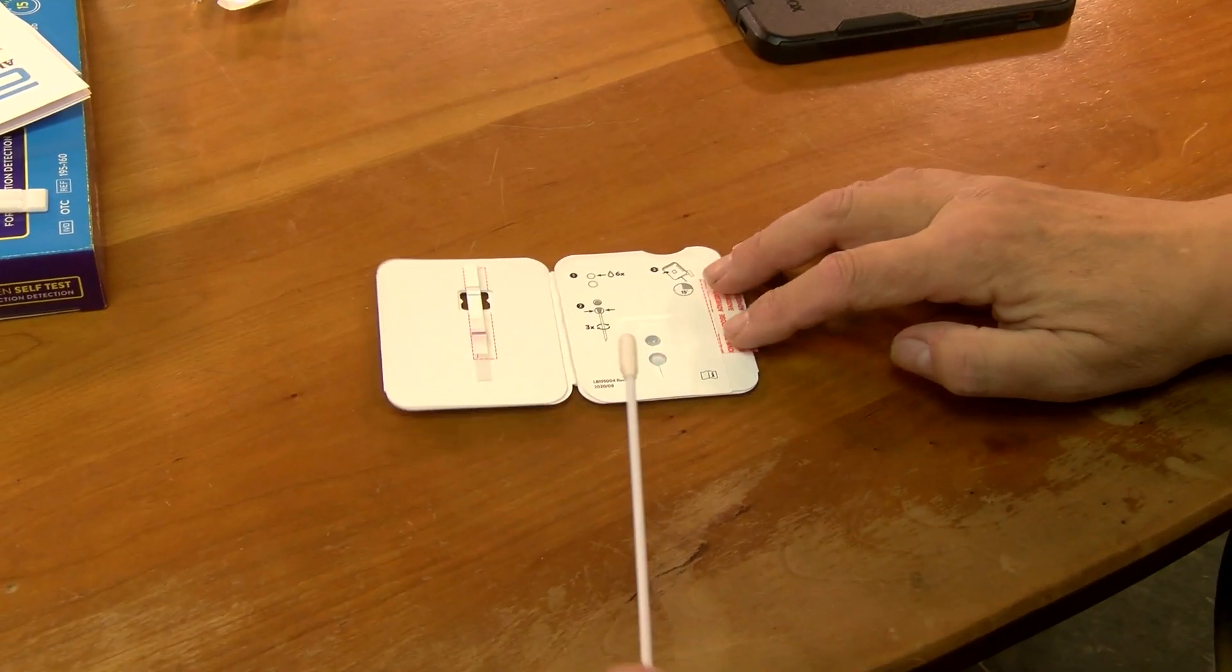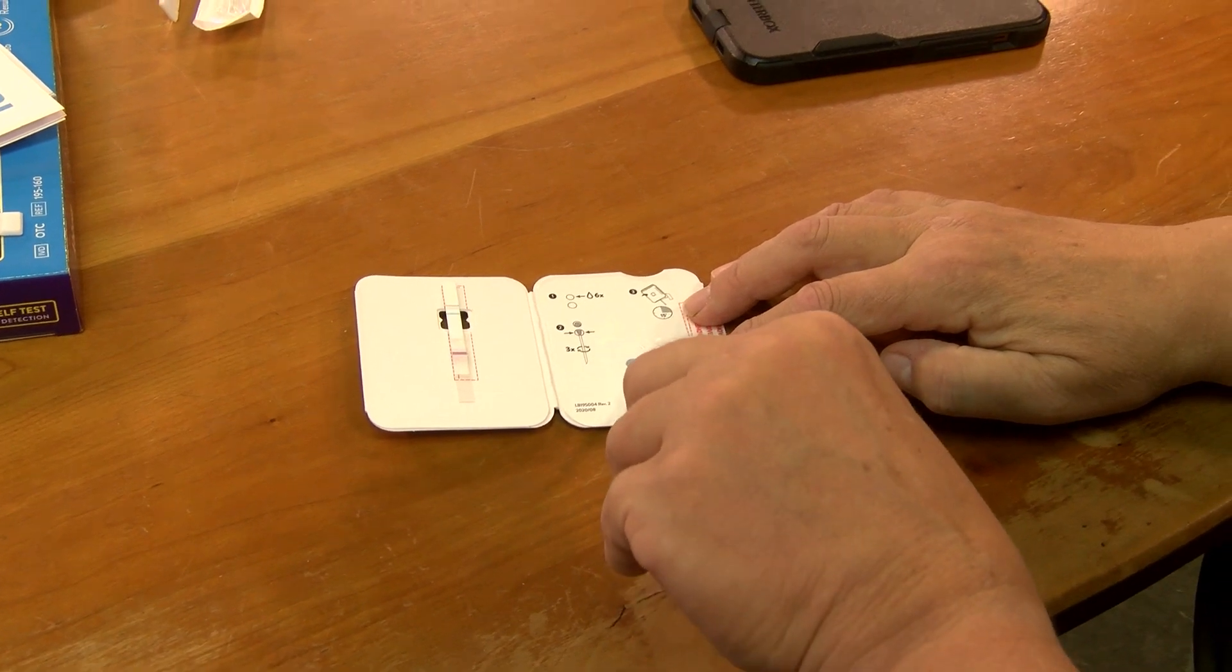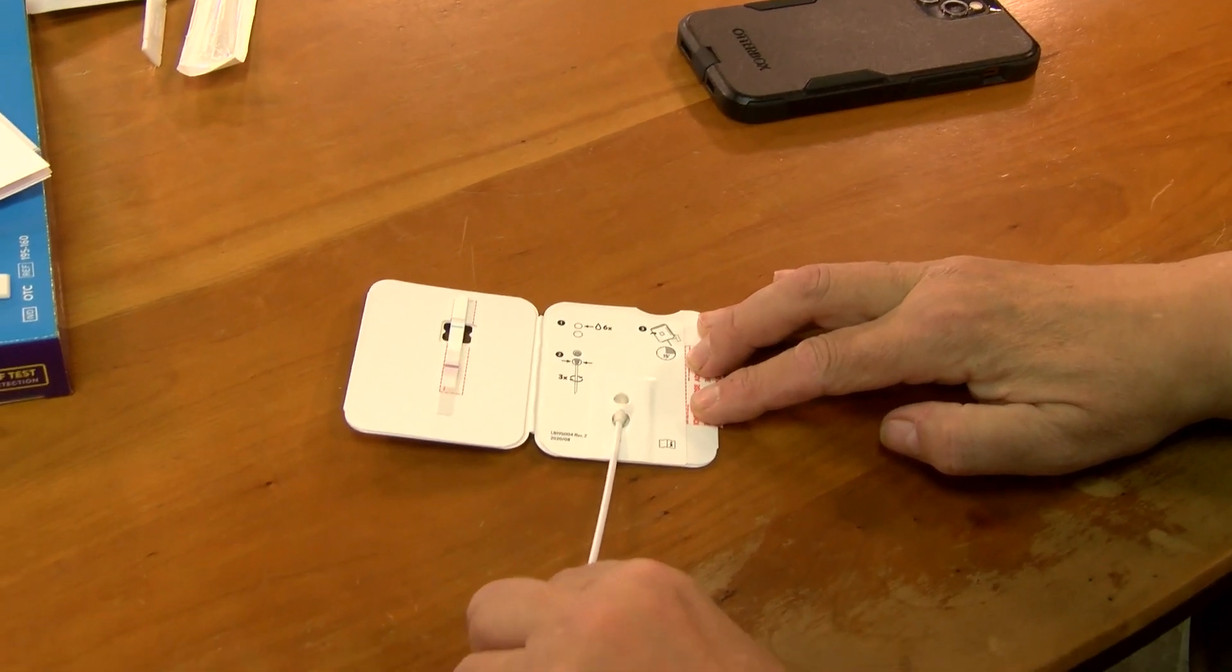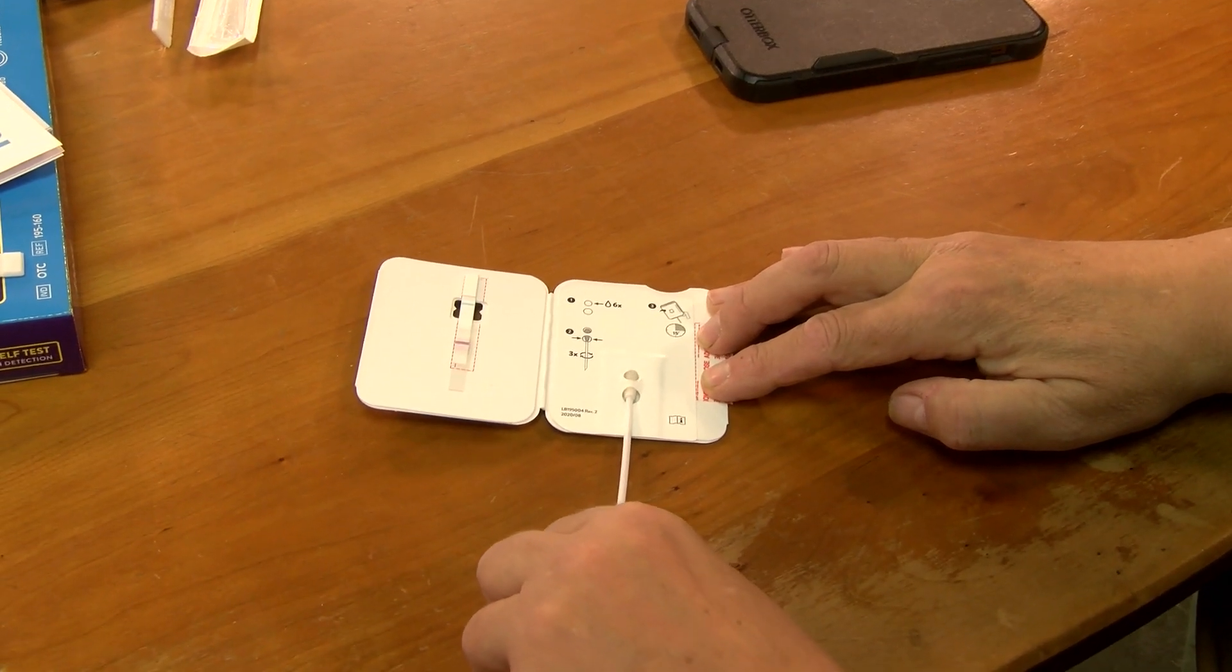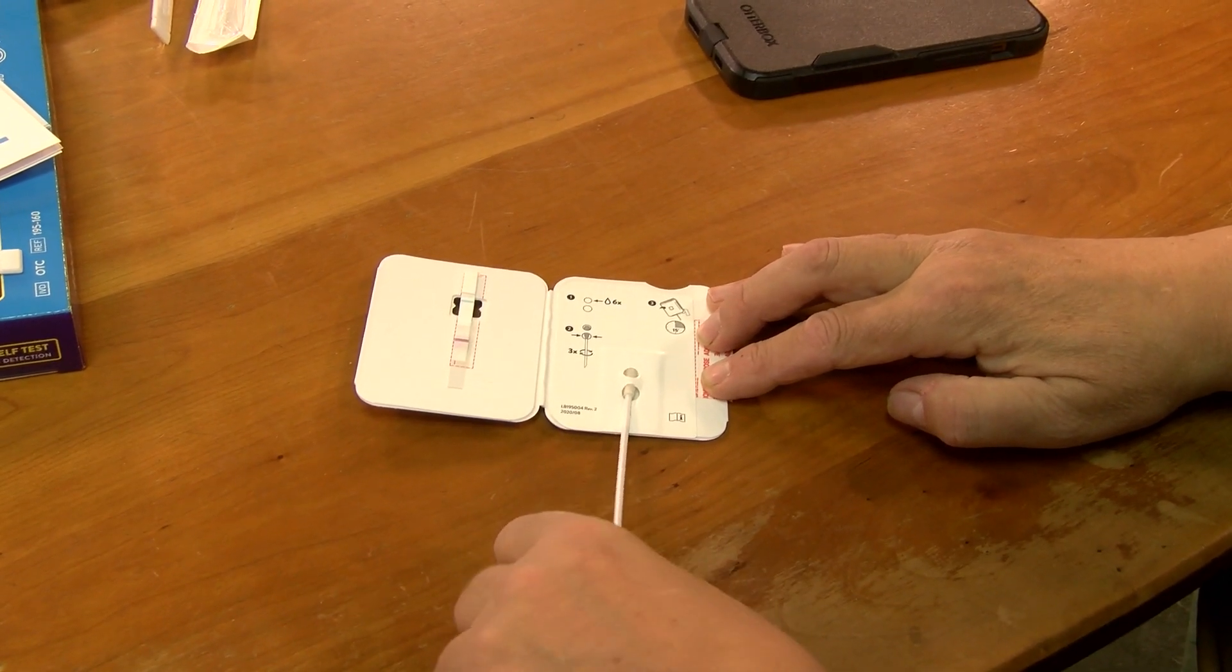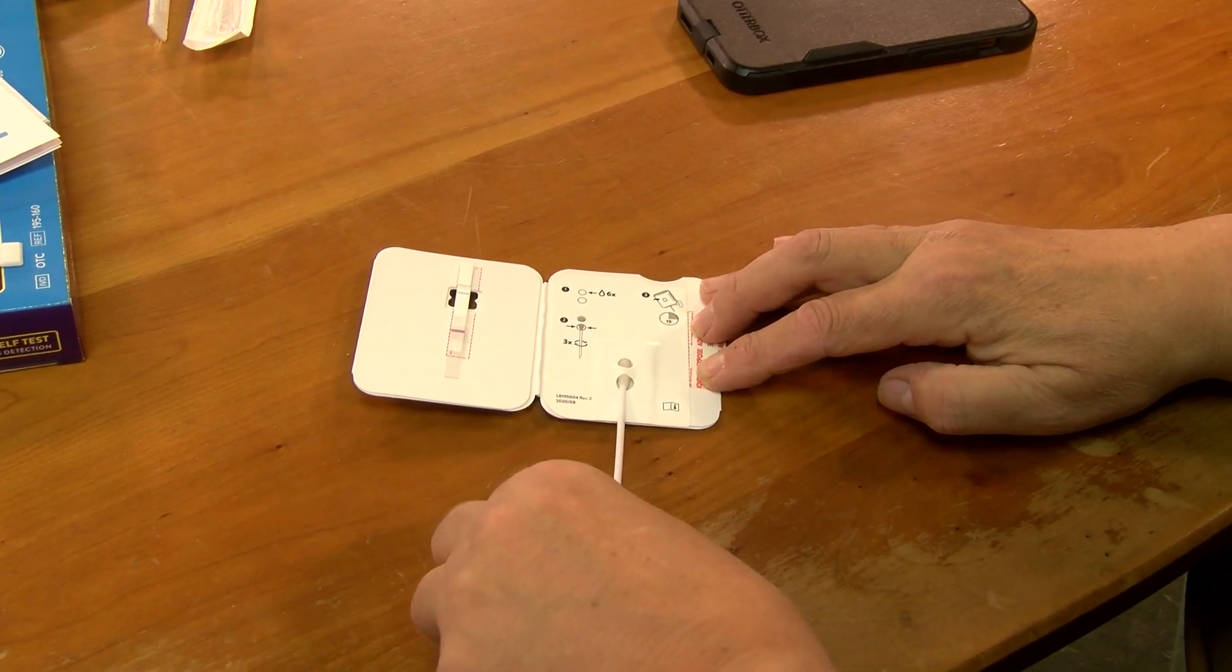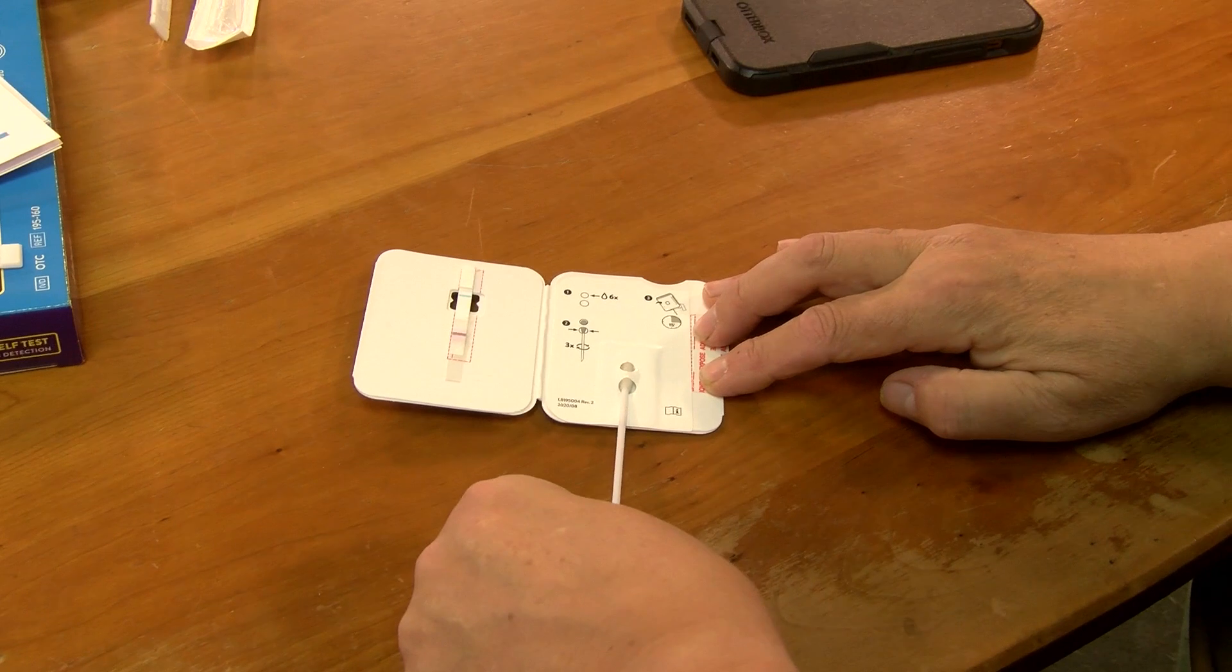When you are done, insert the swab tip into the bottom hole on the test card. Push it in well until you can see it in the top hole. Keep the swab there and don't remove it. Turn the swab three times to mix it with the liquid.